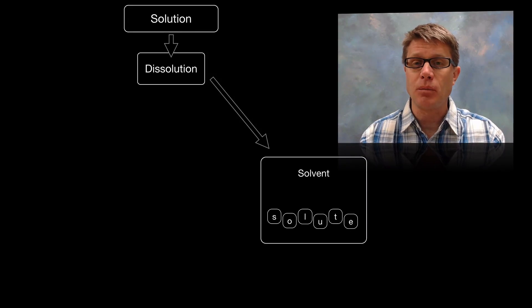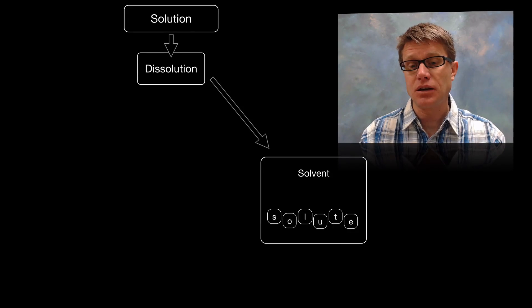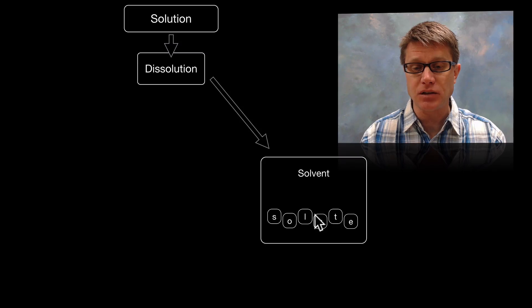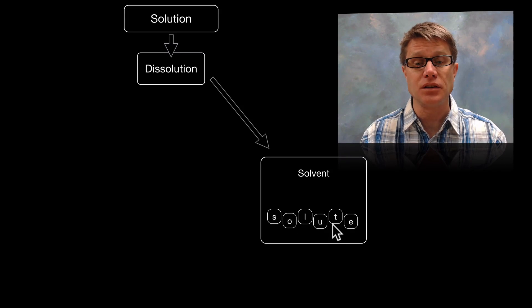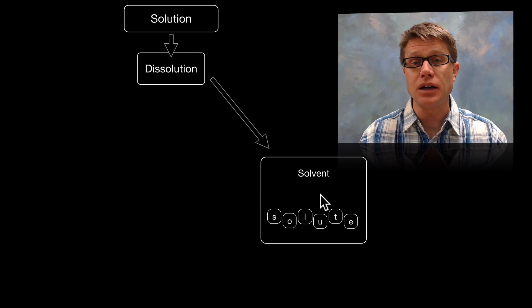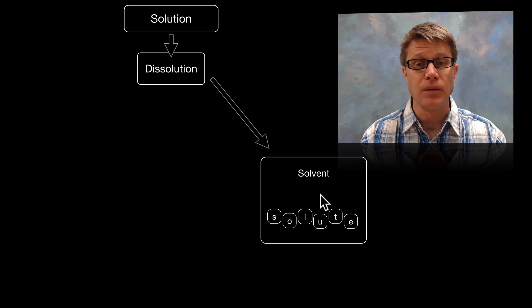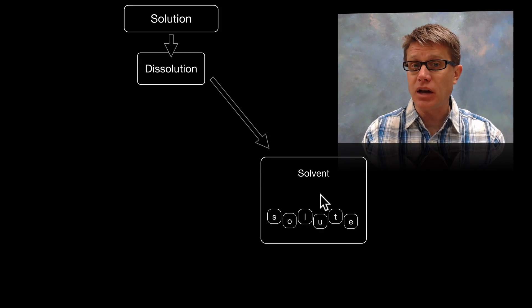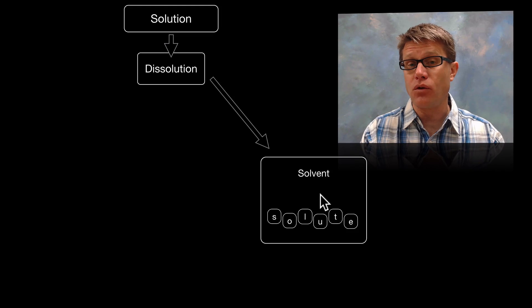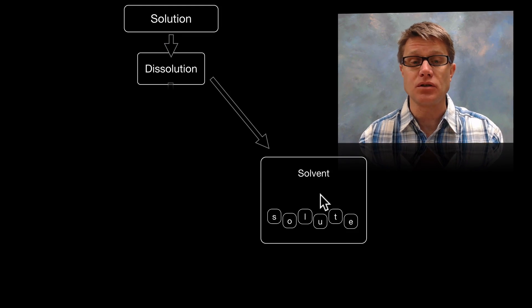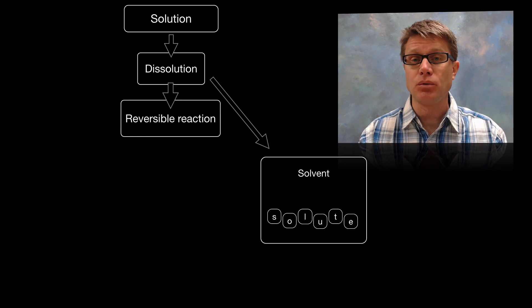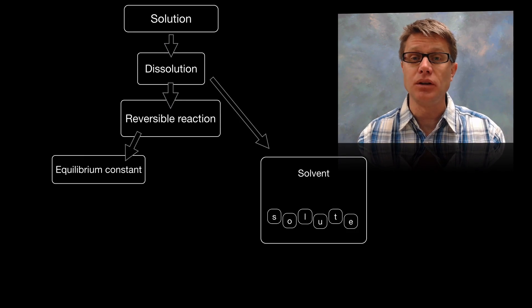And so if we look at a solution remember we're dissolving a solute in a solvent. And so you can think of that solute as a solid if it's all chemically bonded together. And if we can break it apart into its ions then it's dissolved in solution. And so if we think of on the left side of our equation we have the solid form. And on the right side we have it broken apart into its ions. And so really in a solution we have a reversible reaction. It's going to have its own equilibrium constant.